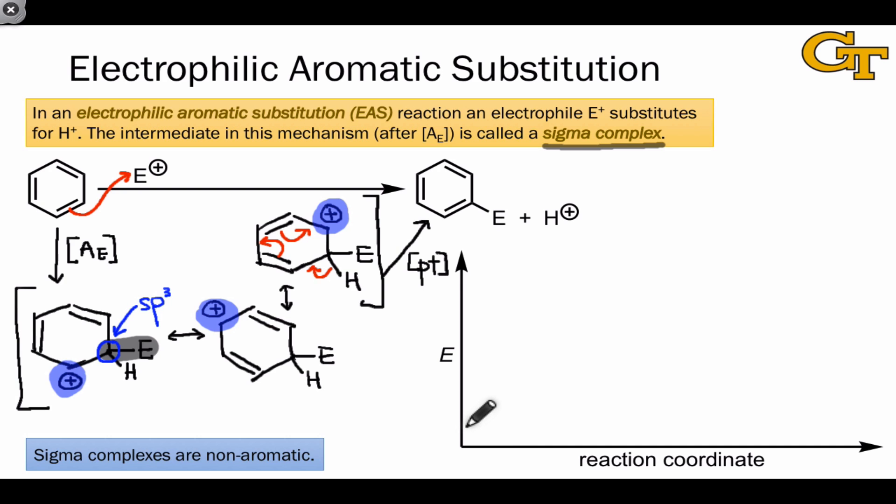Because the sigma complex is non-aromatic, the first step of electrophilic aromatic substitution is universally the rate-determining step, since we have to surmount a barrier that includes, at the very least, the aromatic stabilization energy of the starting material, which in the case of benzene is about 35 kilocalories per mole. The step that follows the proton transfer step tends to be heavily downhill in energy because aromaticity is restored.